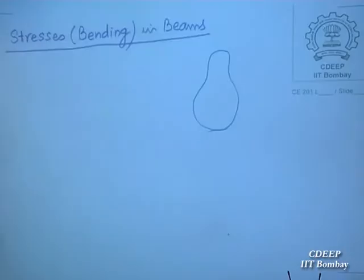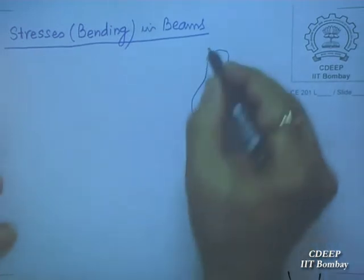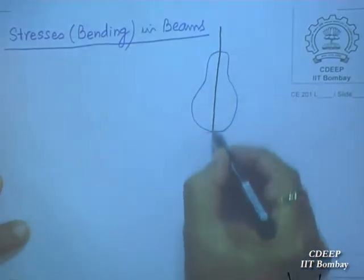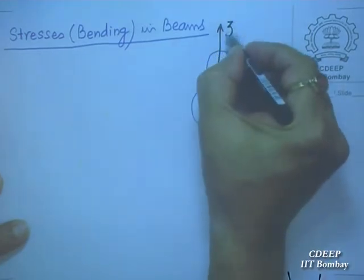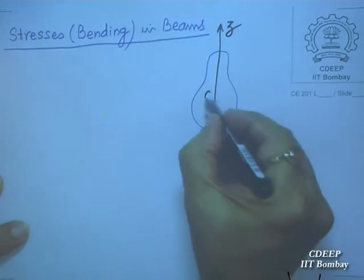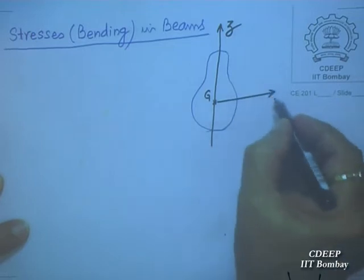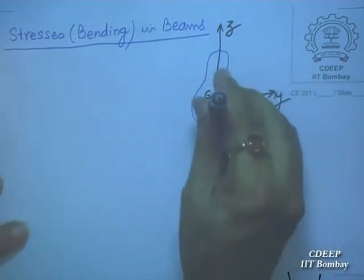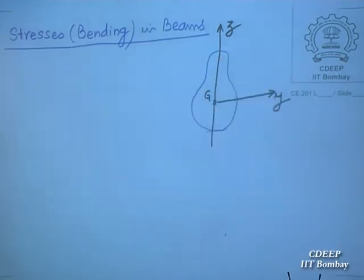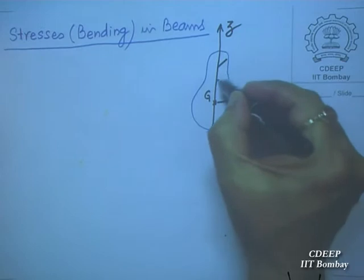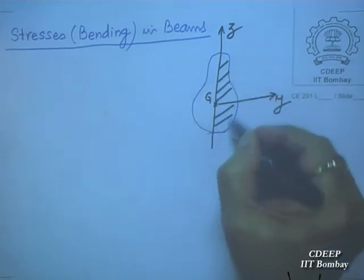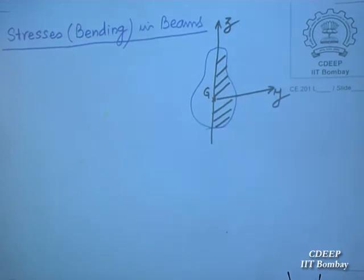The cross section of the beam is something like a dumbbell shape, which has a vertical plane of symmetry. The z-axis is vertical, g is the centroid, and the y-axis is horizontal. The x-axis comes out of the plane. This half is a mirror image of the other, so whatever we develop will be valid for such cross sections.